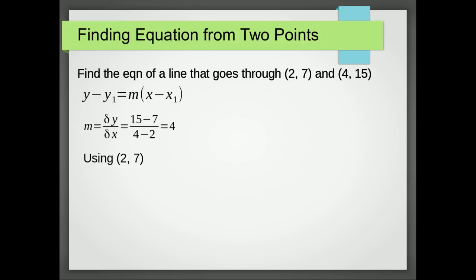We can use either point, but I'm choosing to use 2, 7. So that's going to give me x1 is 2, y1 is 7, and then just substitute our m, x1 and y1 back into the equation above, and we get y minus 7 equals 4, x minus 2.